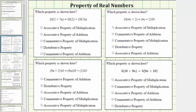Welcome to four examples of identifying which property of real numbers is shown. First we have 10 times the quantity 2 plus 7x equals 10 times 2 plus 10 times 7x. Notice from the left to the right, the 10 is multiplied by both terms inside the parentheses — the 10 has been distributed. This is an example of the distributive property.